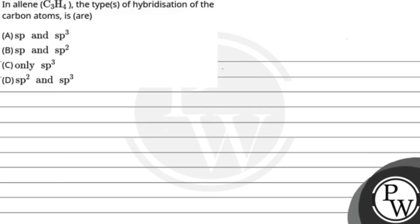Hello, let's see this question. The question says in allene C3H4, the type of hybridization of carbon atoms is... So first let's see the key concept of this question.